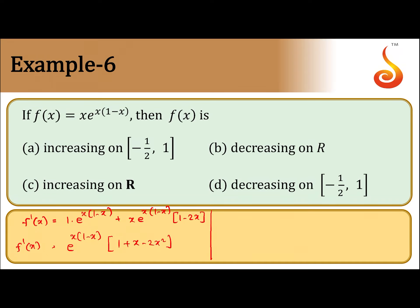Now, f dash x is greater than 0 for increasing function. f dash x is greater than 0. It means 1 plus x minus 2x square is greater than 0 or we can write x minus 1 into 2x plus 1 is less than 0 or x lies between minus 1 by 2 to 1.